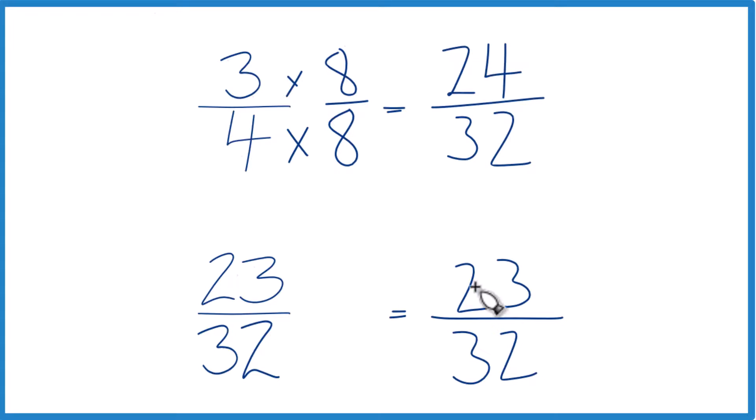Now, same denominator, compare the numerators. And 24, that's greater than 23. So 24/32, that's greater than 23/32 by 1/32, but still greater.